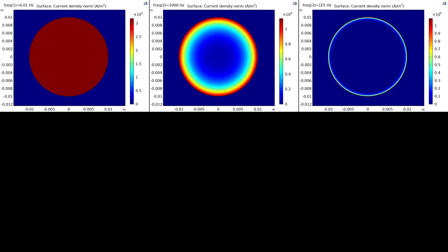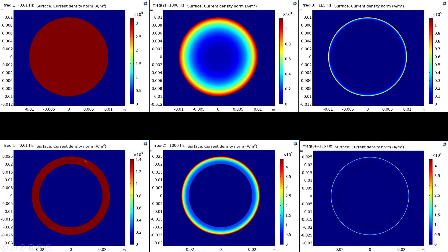Let us start with a basic case. If you have a conductor and a current i passes through this conductor, if the frequency is low, then the current will distribute across the cross-section of this conductor. As the frequency increases, the current tends to flow near to the boundaries of this conductor. This phenomenon we call the skin effect. Even if you have a tubular conductor like this, at low frequency the current passes through the whole cross-section. As the frequency increases, the current tends to flow near to the outer surface of this conductor, and at high frequency it almost flows on the outer surface. Same phenomenon: skin effect.